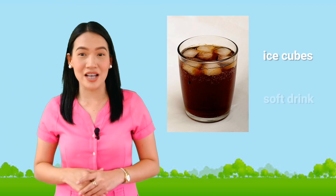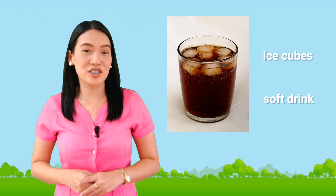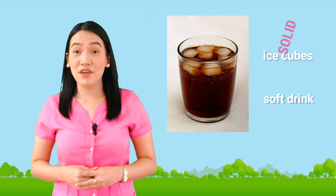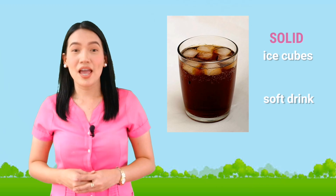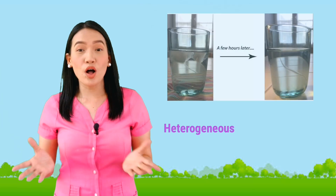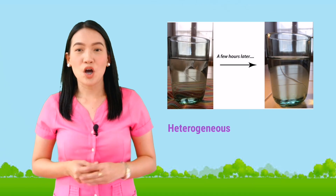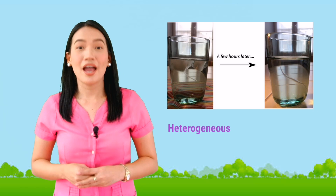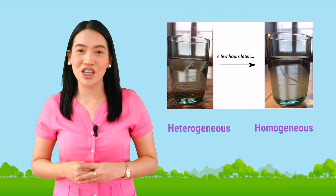An example of a heterogeneous mixture is ice cubes placed in a glass of soft drink. There are different phases that can be identified in this example: the solid phase, which is the ice cubes, and the liquid phase, which is the soft drink. When all the ice cubes are melted, only one phase is seen, and that is liquid. It now becomes homogeneous. An example of a homogeneous mixture is a solution.